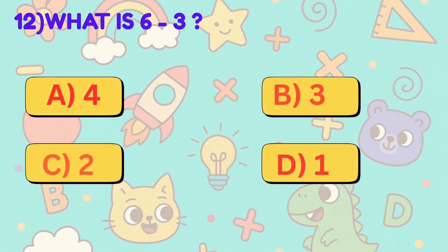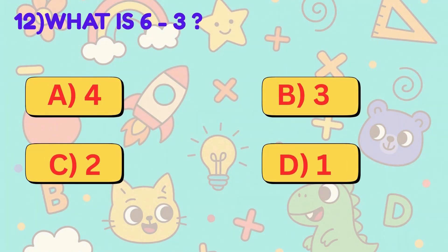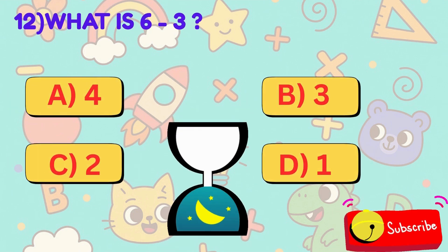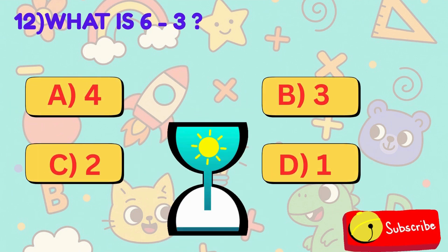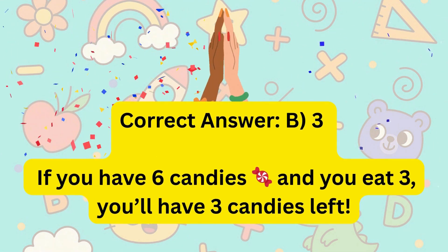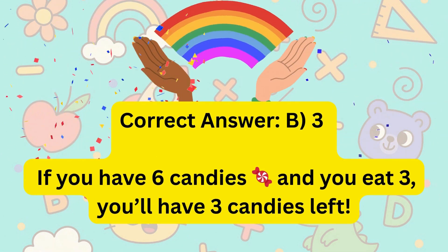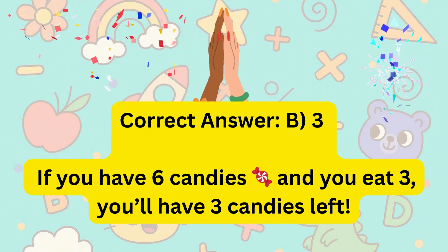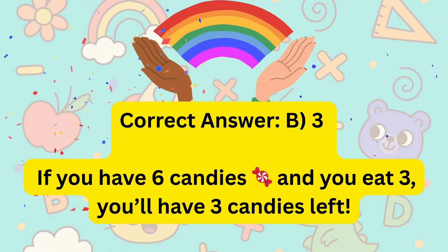12. What is 6 minus 3? Is it A, 4, B, 3, C, 2, or D, 1? Correct answer is B, 3. If you have 6 candies and you eat 3, you'll have 3 candies left.